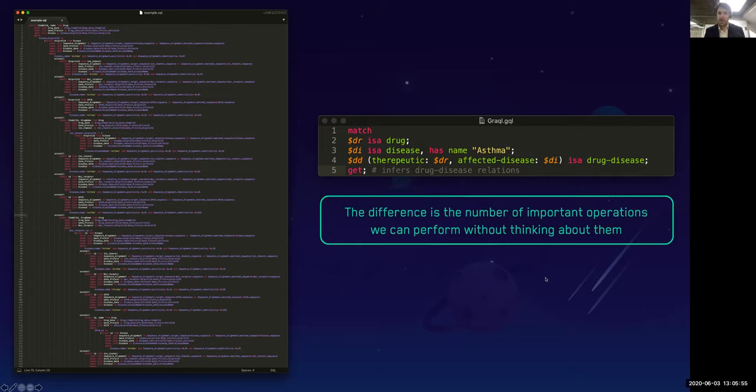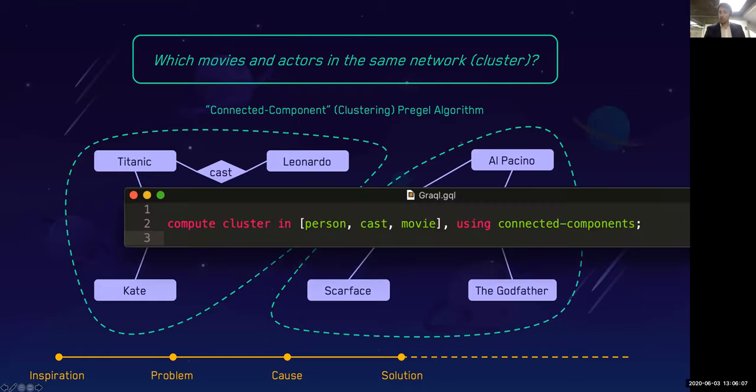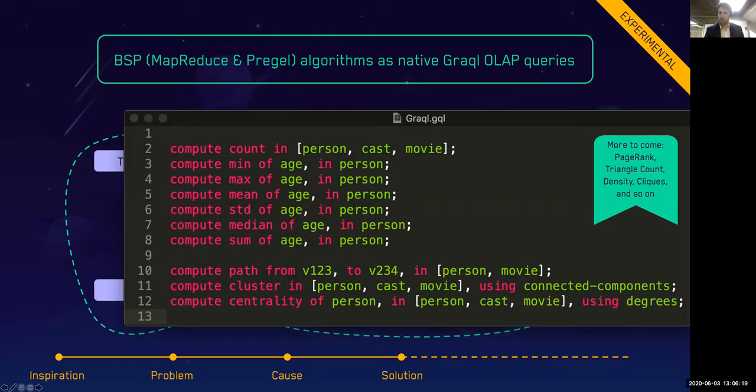Finally, something I haven't spoken about really today—that's the analytical side of Graken. Everything I've touched upon is more on the OLTP side. But on the OLAP part, if we have something like connected component algorithms, we can actually write that as a function in the language. You would say compute cluster in these types using this algorithm. We have not one but several of these algorithms, including K-Core, centrality, connected components, and some other computer algorithms. This is still a fairly experimental part of Graken. It's less mature than the OLTP part, I should add.